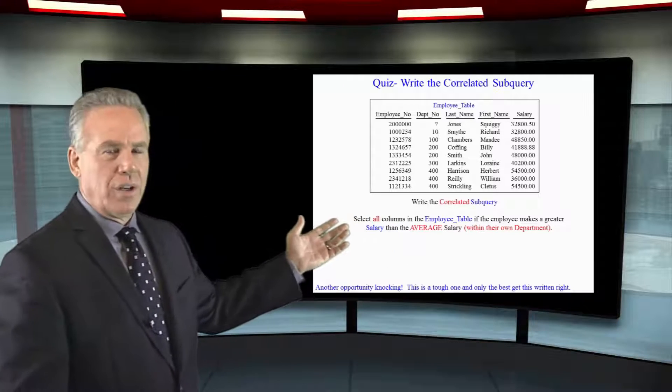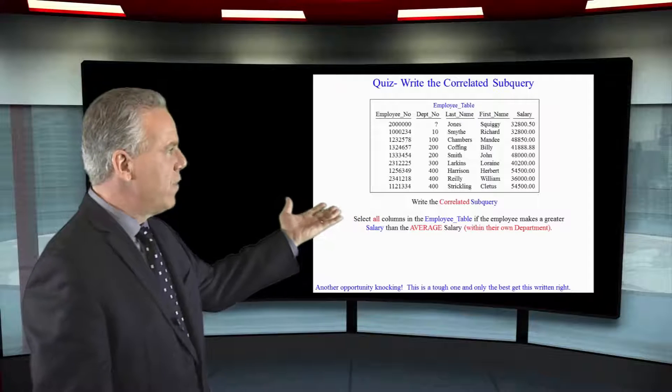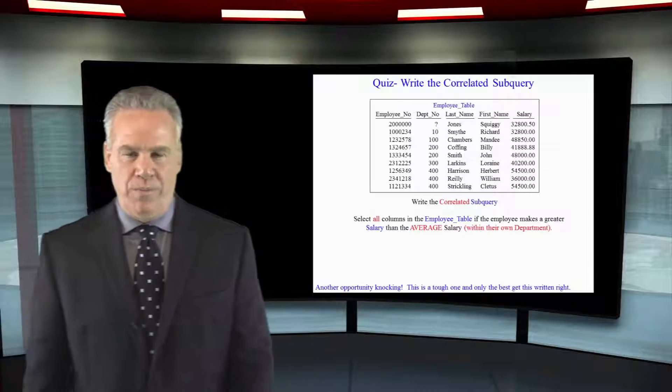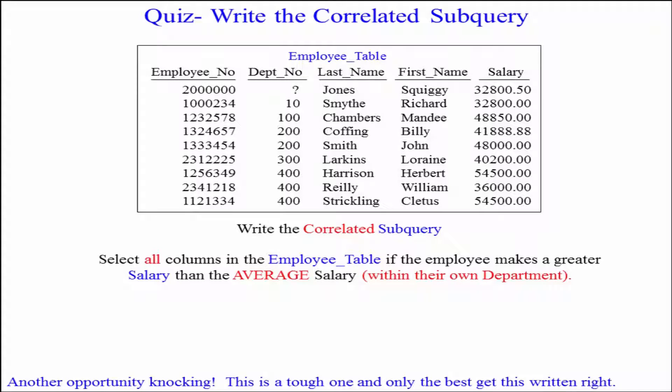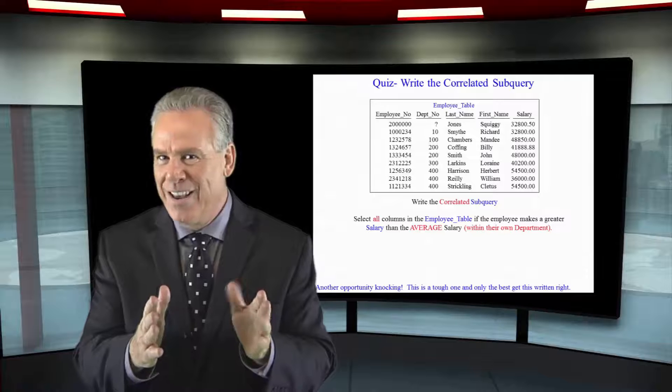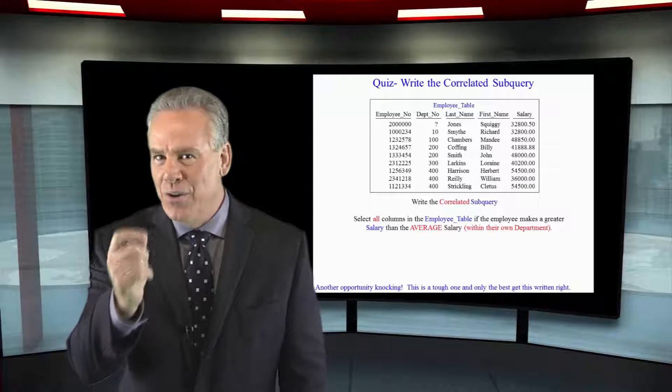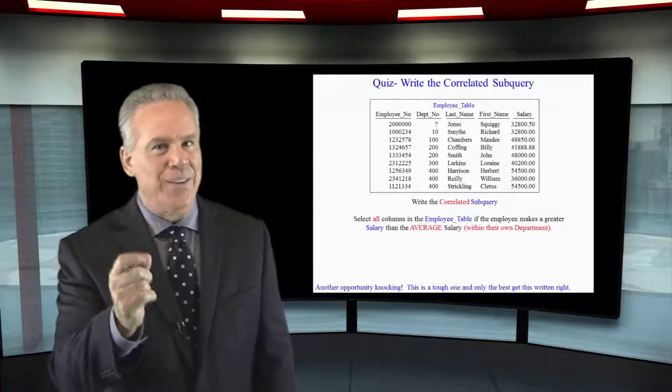Here is the question. I want you to select everything from the employee table if the employee is making a greater salary than the average salary within their own department. Use a subquery to do it and good luck.